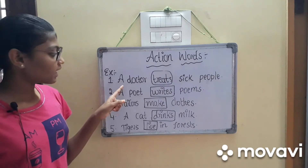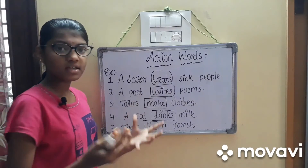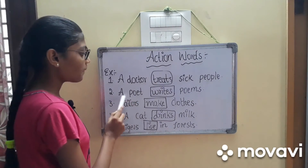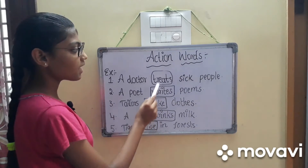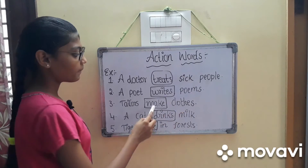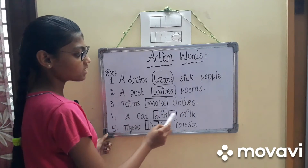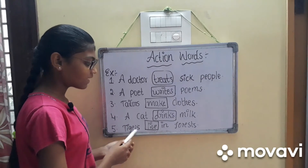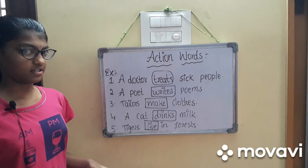Now we will read: a doctor treats sick people — treats is the action word. A poet writes poems — writing is the action word. Tailors make clothes — making is the action word. A cat drinks milk — drinking is the action word. Tigers live in the forest — living is the action word.